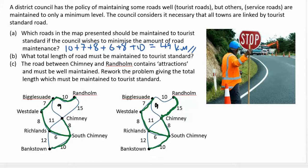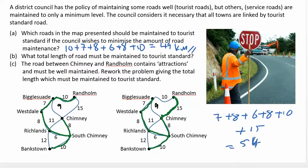Adding those up in my modified spanning tree: 7, 8, 6, 8, 10, and 15, and that will give me a total of 54 kilometres.